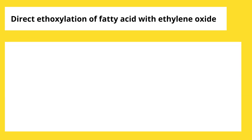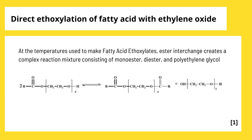At the temperatures used to make fatty acid ethoxylates, ester interchange creates a complex reaction mixture consisting of monoester, diester, and polyethylene glycol.